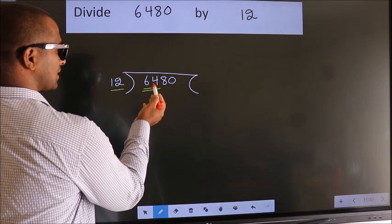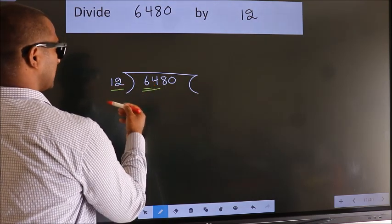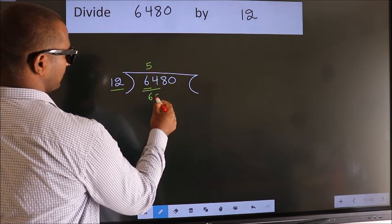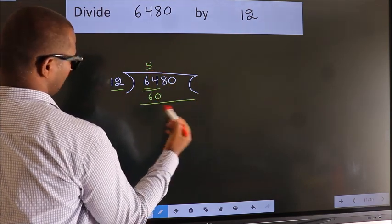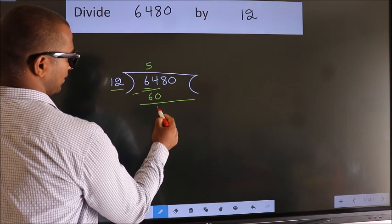A number close to 64 in the 12 table is 12 fives, 60. Now we should subtract. We get 4.